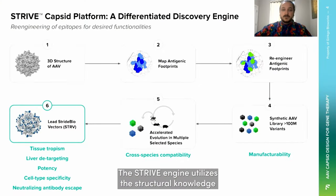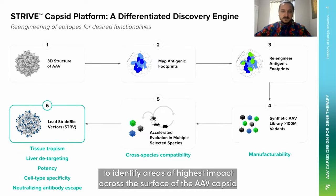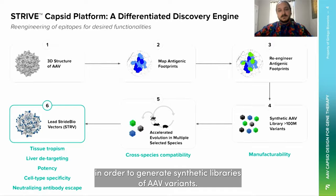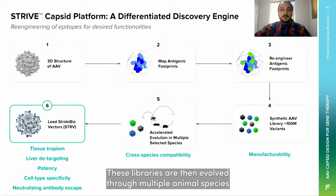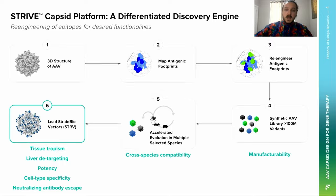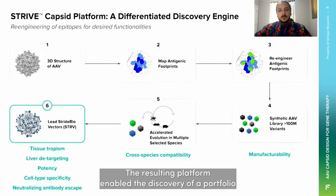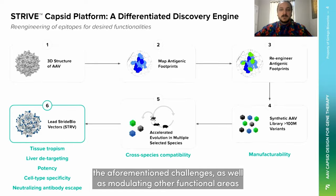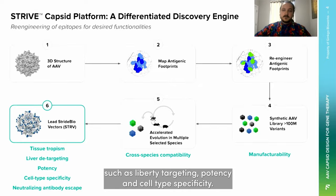The Stride engine utilizes structural knowledge to identify areas of highest impact across the surface of the AAV capsid, with roots in modifying the AAV antigenic surface in order to generate synthetic libraries of AAV variants. These libraries are then evolved through multiple animal species through a cross-species method to enrich for cross-species compatibility and de-risk clinical development. The resulting platform enabled the discovery of a portfolio of promising capsids, many of which directly address those challenges as well as modulating liver detargeting, potency, and cell type specificity.